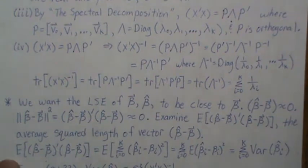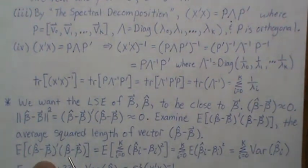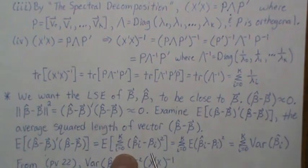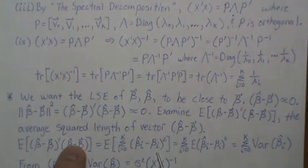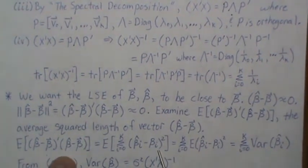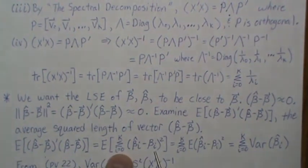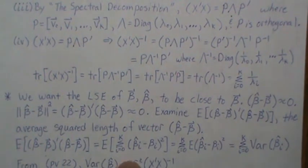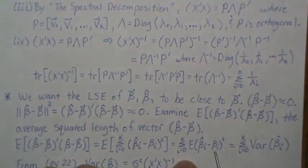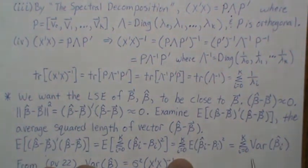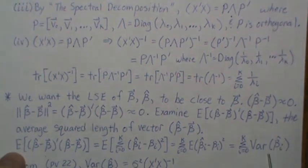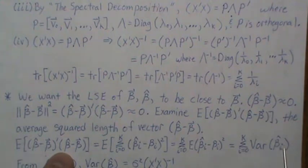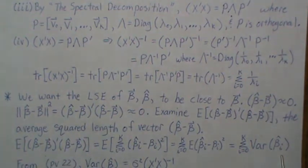The expected value of the squared length of β̂ - β expands as a sum of terms, each of which is a random variable minus its mean, squared. So each term is the variance of β̂ᵢ. Therefore this average squared length equals the sum of the variances of the components of our least squares estimates.